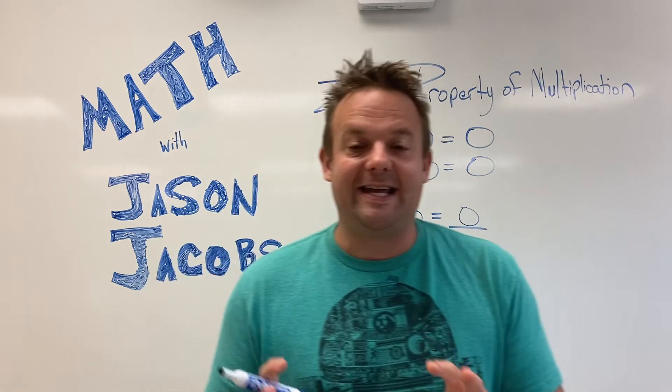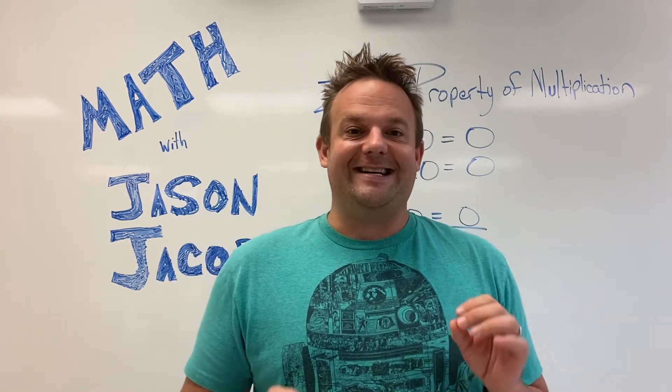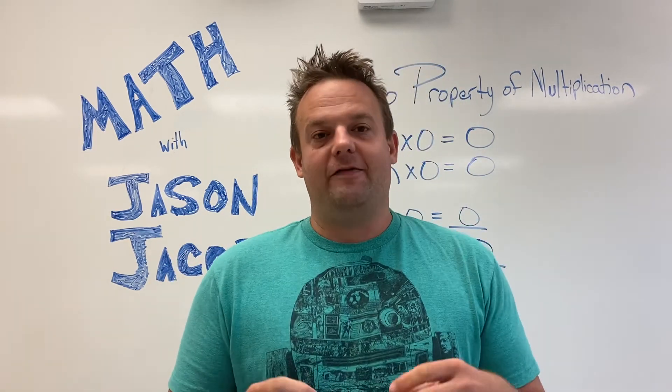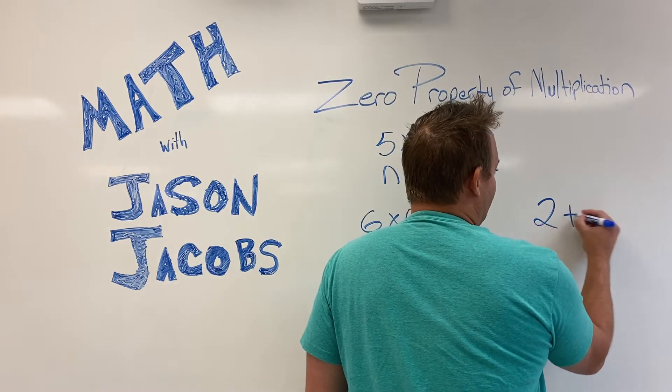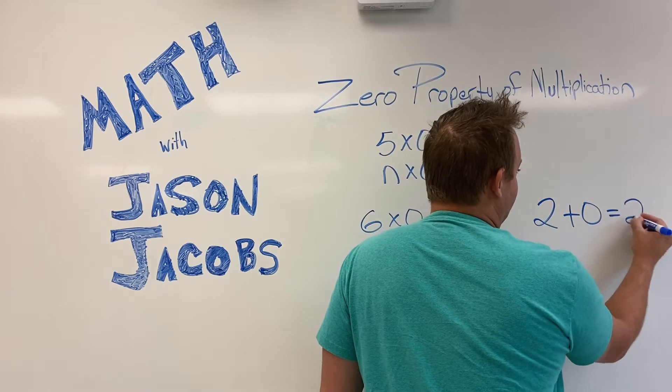Now don't get it mistaken with the identity property of addition. The identity property of addition says like any number, let's say two, plus zero equals two.